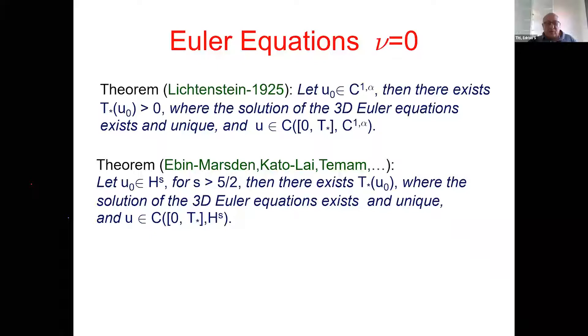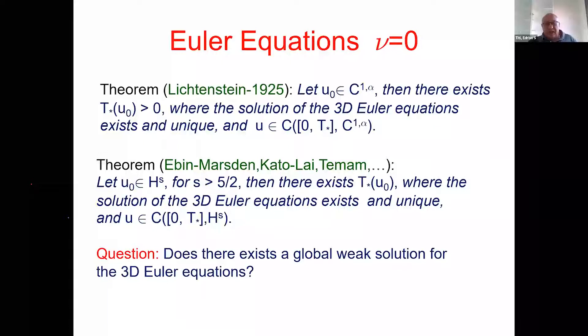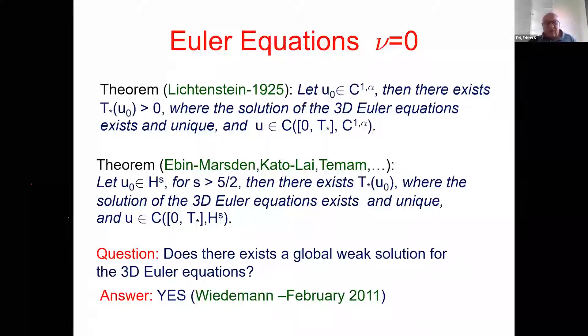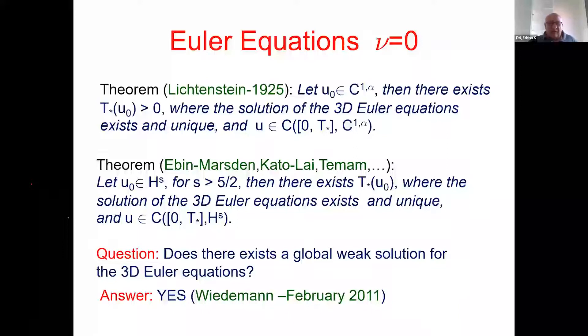A long-open question was: does there exist a global weak solution for the 3D Euler equation for any initial data? This was settled by Wiedman in February 2011, who proved that for every initial data in the energy spaces, there are not just one but infinitely many weak solutions. As the saying goes, if it rains, it pours. This is based on the convex integration machinery.